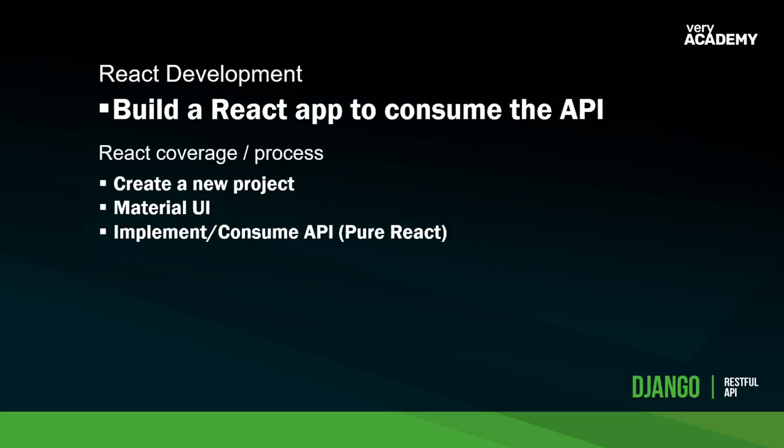Once that's all done, we'll move across to React and build a React application to consume the API. The Django product we make is a standalone application, so you can just learn that if you want. I selected React because it's probably still one of the most popular JavaScript frameworks. We'll use Material UI for the front end and build upon each tutorial, adding new functionality.